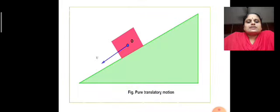This is the case of a body which is having pure translational motion. That is, along a slope the object is sliding. It is having only translational motion.